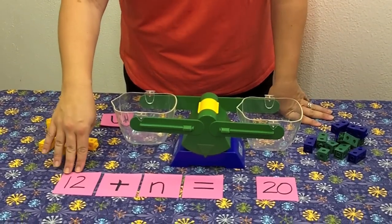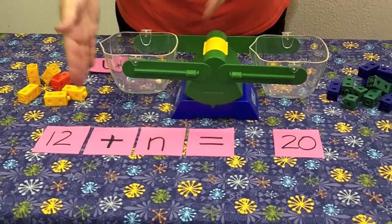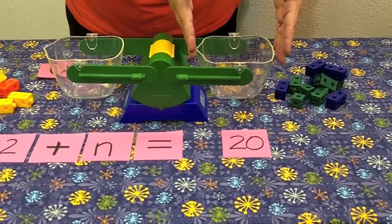Alright, so here we have an addition equation, 12 plus n equals 20. On this side of the balance scale, we have 12 plus n. On this side of the balance, we have 20.